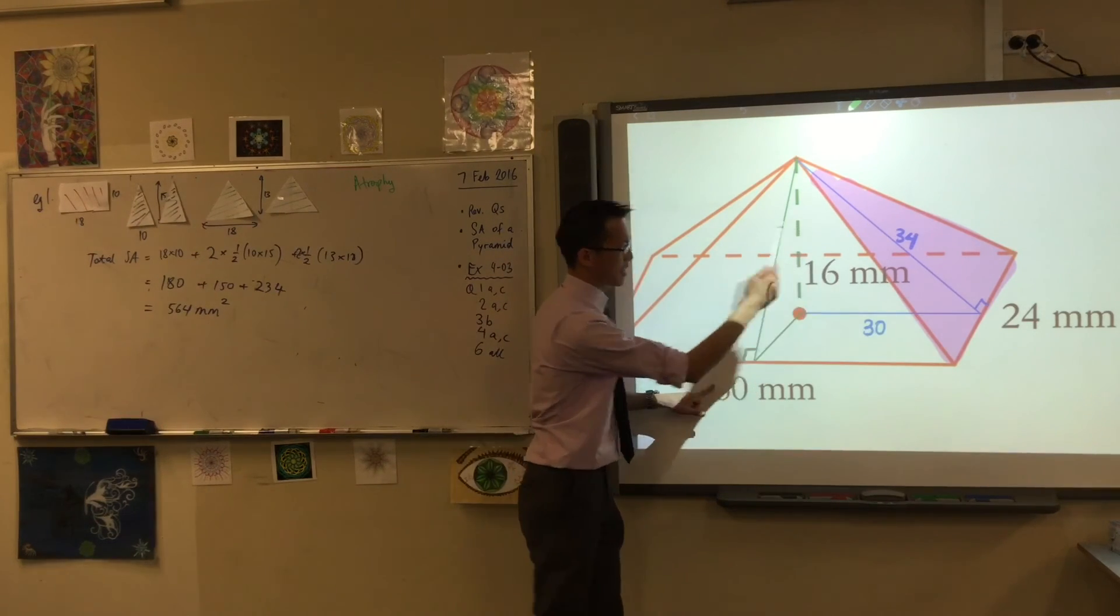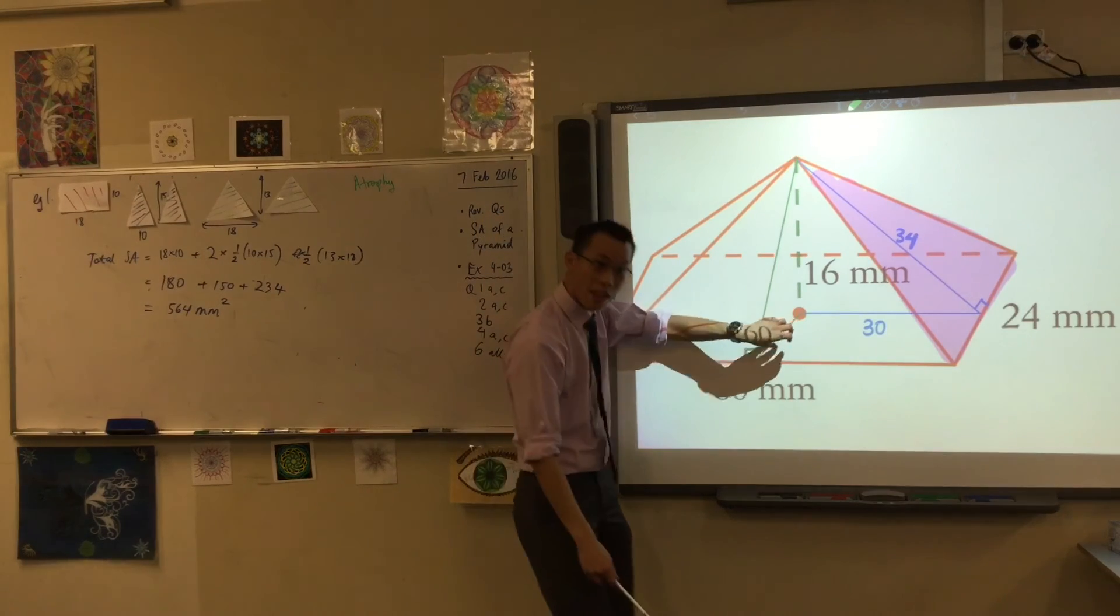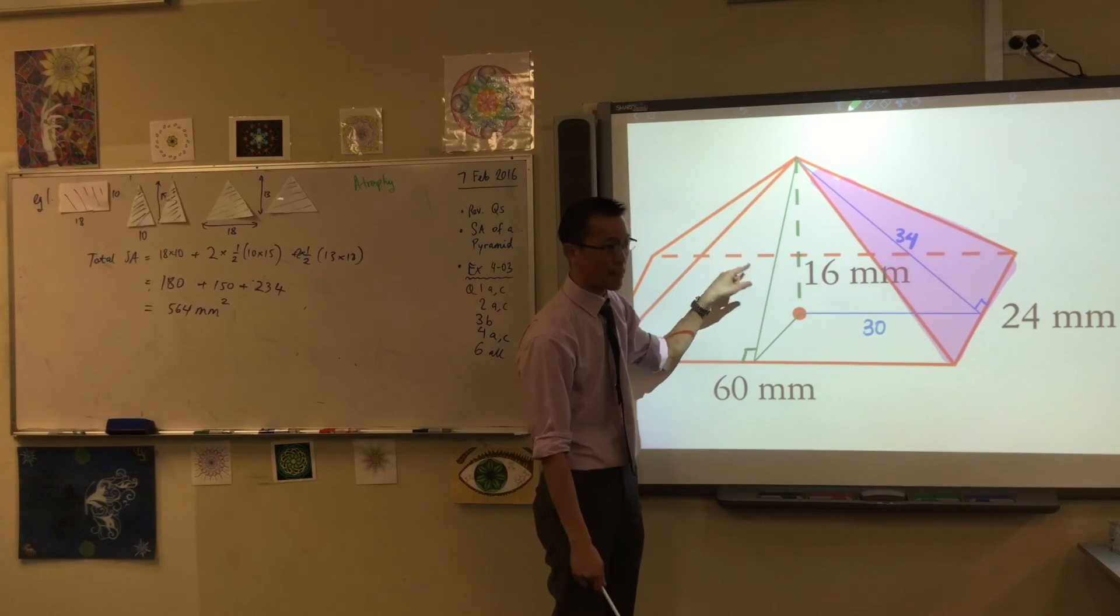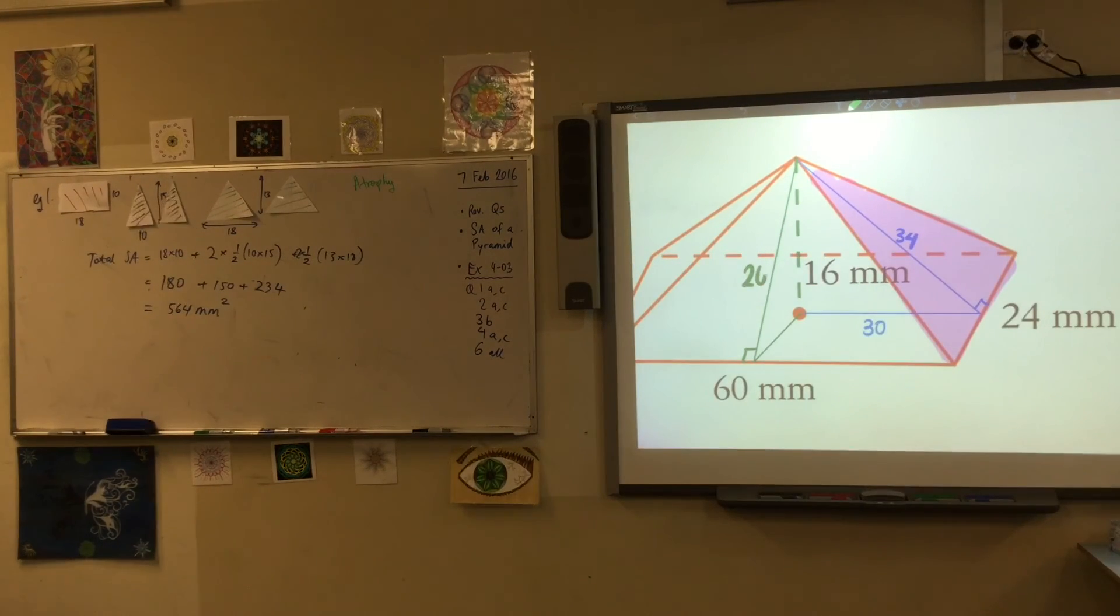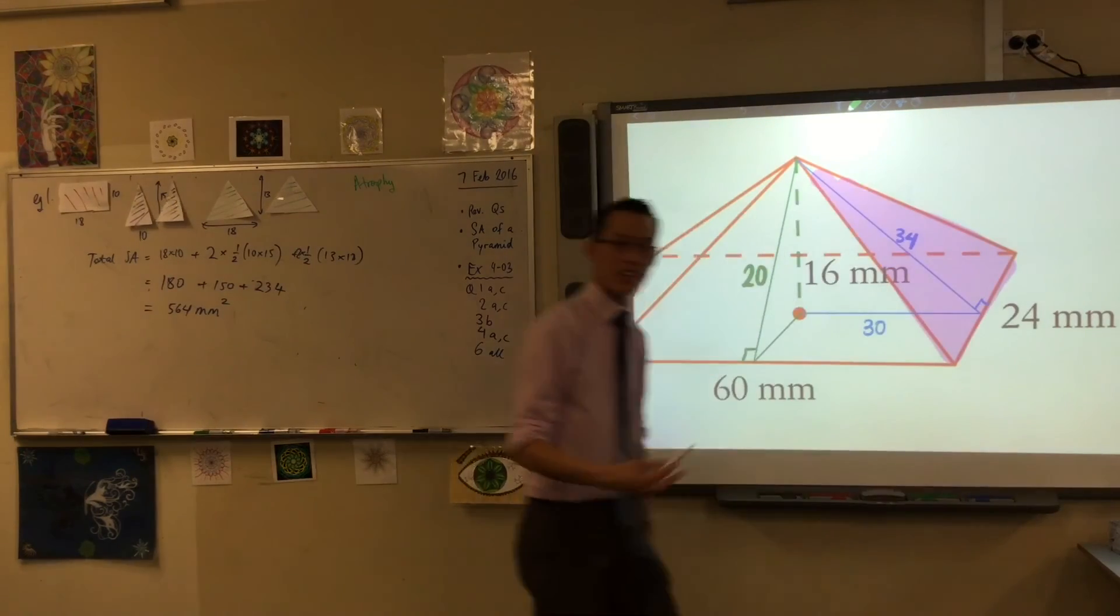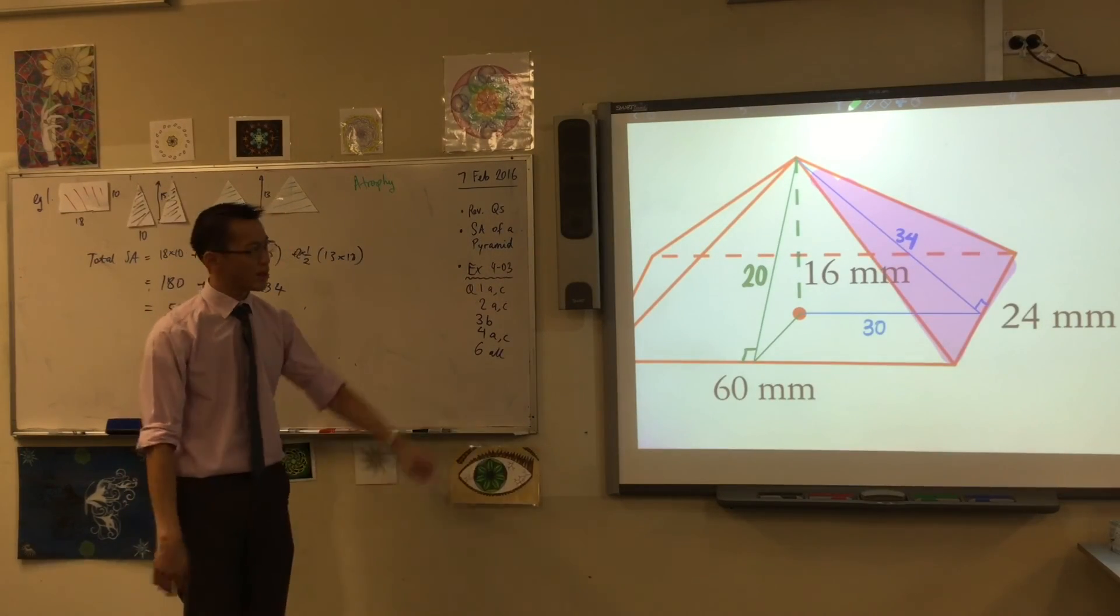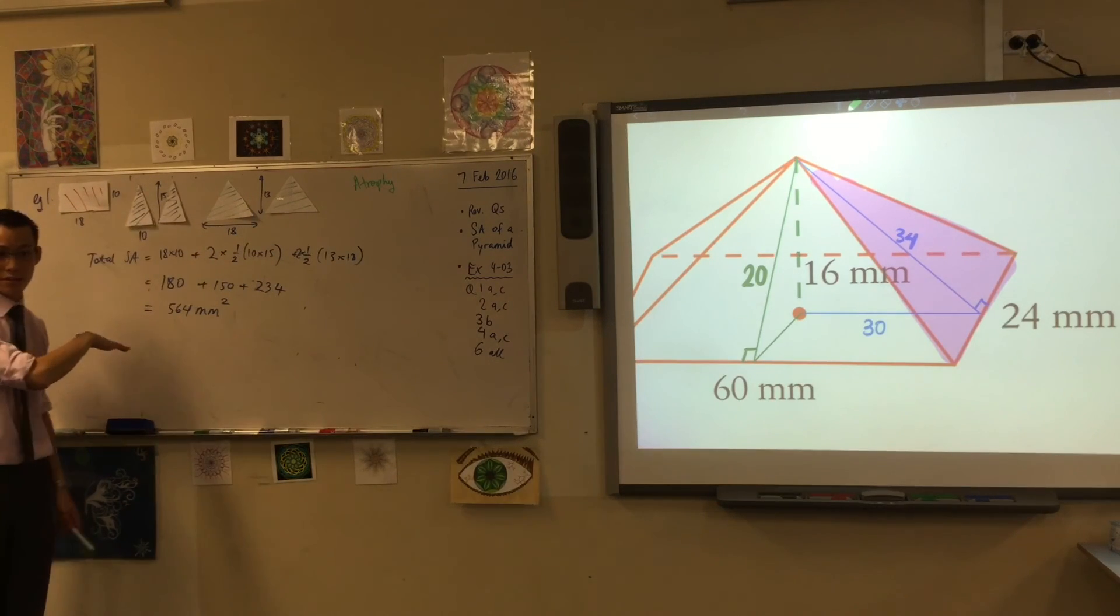So you've got 12, 16. If you think about your numbers, I'm pretty sure this is another 3, 4, 5 right angle triangle. Right? So I think that makes this one 20. Okay? And you can go ahead and you can do Pythagoras probably to check it out. Now I've got all my numbers. I've turned that pyramid into this one, and you can go and do the rest. Okay? Does that make sense? See how I did it?